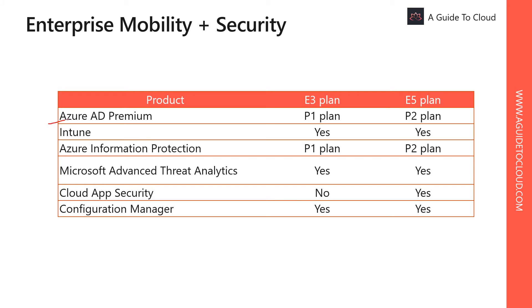EMS includes products like Azure AD Premium, Microsoft Intune, AIP or Azure Information Protection, ATA which is Microsoft Advanced Threat Analytics, CAS which is Cloud App Security, and Configuration Manager which is your endpoint manager.